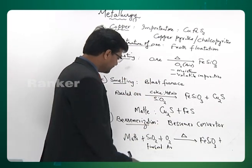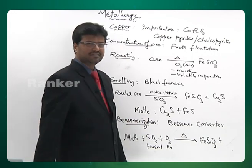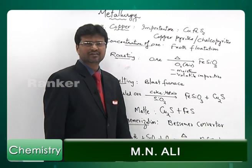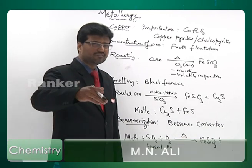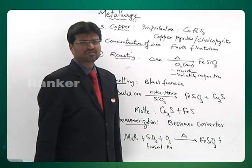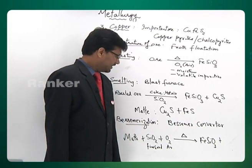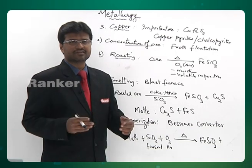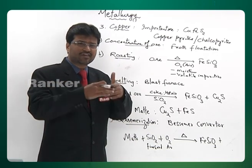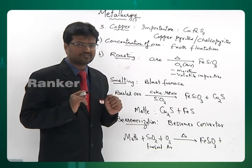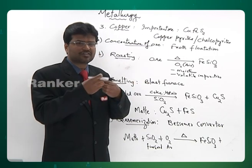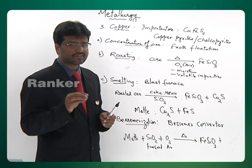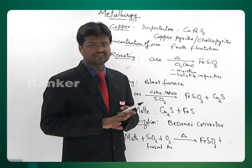Once the flame colour changes, cut the supply of sand and continue passing air and heating. Some of the copper sulphide will then get oxidized to copper oxide. Then cut the supply of air and continue heating — further conversion of copper sulphide to copper oxide stops, and the reaction between copper sulphide and copper oxide starts, which is called auto reduction. There are three stages in Bessemerization.